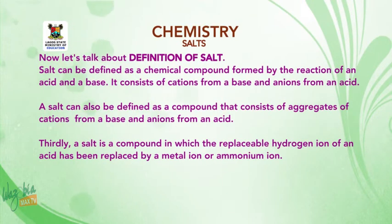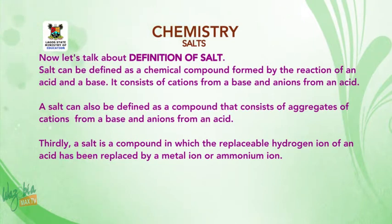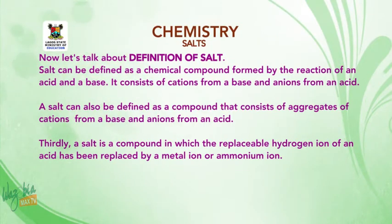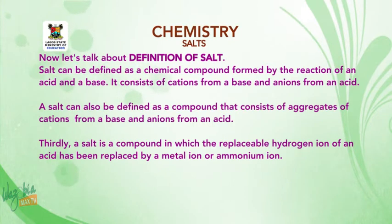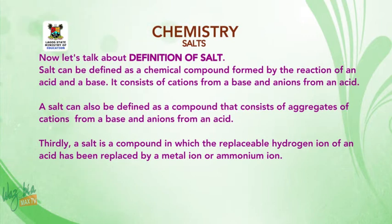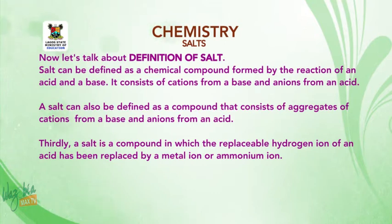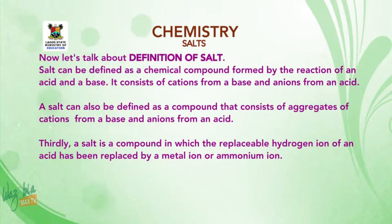Now let's talk about the definition of salts. Salts can be defined as a chemical compound formed by the reaction of an acid and a base. It consists of cations from a base and anions from an acid. A salt can also be defined as a compound in which the replaceable hydrogen ion of an acid has been replaced by a metal ion or ammonium ion.